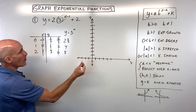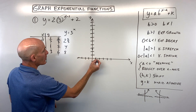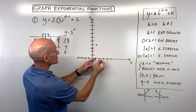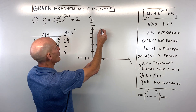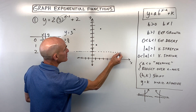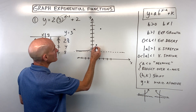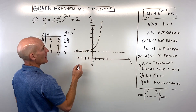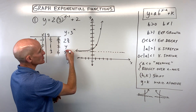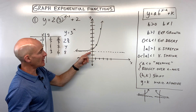Now if we plot these points: 0, 2 and 2 thirds is right here; 1, 4 is right here; and 2, 8 is right about here. Notice the k value of 2 — that's our horizontal asymptote, y equals 2, so you can draw that line in. The graph is exponential growth going up to the right, approaching the horizontal asymptote as you go to the left. The domain is all real numbers, and the range is y is greater than 2.